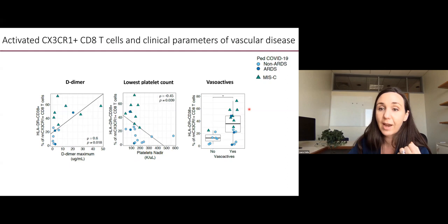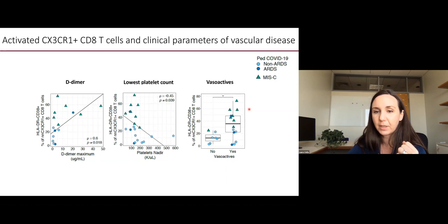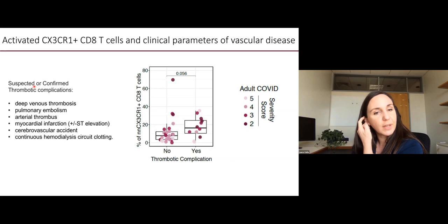What we first did was to look at all pediatric patients and ask whether the presence of these activated vascular patrolling cells correlated with known features of vascular disease. You can see that they correlated with D-dimer and they correlated with low platelets, which can be seen in vascular disease. Most importantly, when we asked which patients required intensive care unit admission for blood pressure support, like epinephrine, you can see that the presence of these cells was much higher in patients who required vasoactive support. We then asked whether similar relationships existed in adult populations. You can see that patients who had known thrombotic complications had higher proportions of activated vascular patrolling cells.